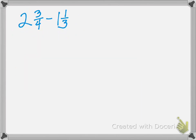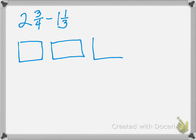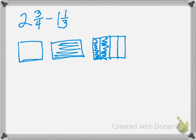Let's go ahead and do another one. This one has some whole numbers. We're going to draw the 2 and 3 fourths: there's one whole, two whole, and then our 3 fourths. We're going to give ourselves some vertical lines and color in three of them for 3 fourths. So here we have 2 and 3 fourths.